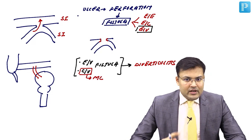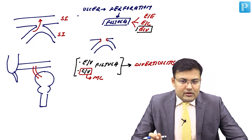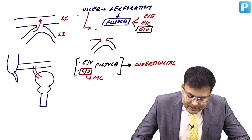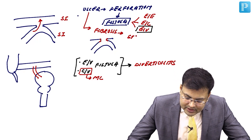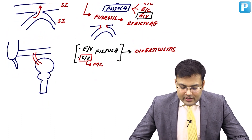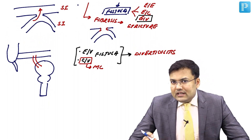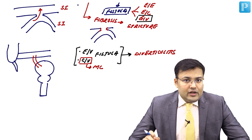Coming back to Crohn's disease: there are three types of fistula — enteroenteric, enterocutaneous, and enterovesical. Another problem is that ulceration leads to fibrosis, and because of this fibrosis there is stricture formation. Because of chronic inflammation and fibrosis, the bowel wall becomes thick, firm, rubbery, and almost incompressible.